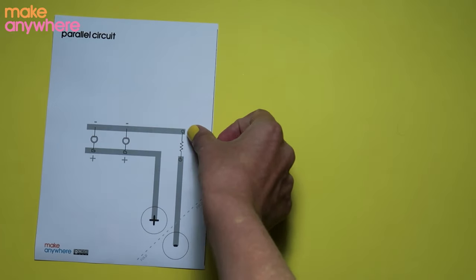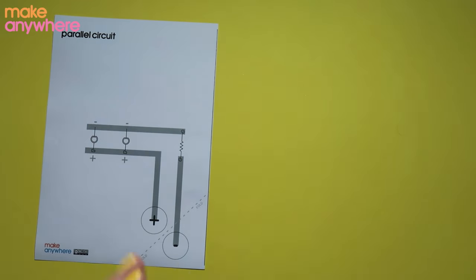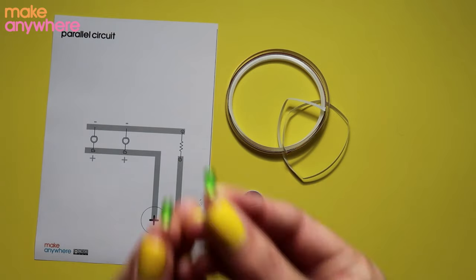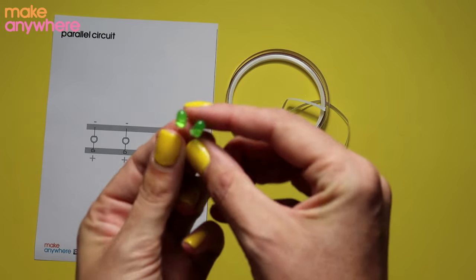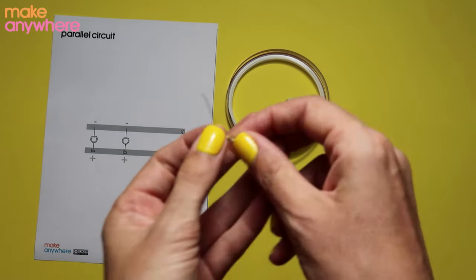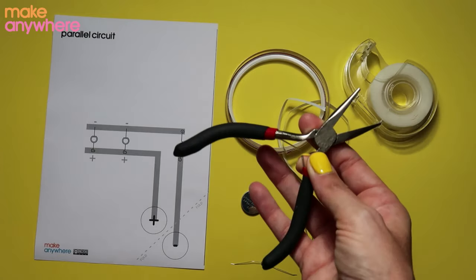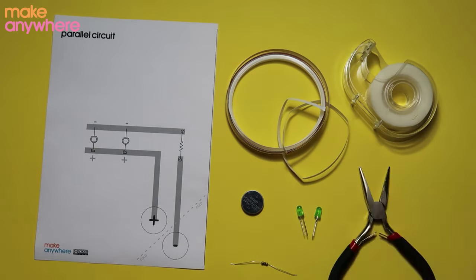You'll need our free template that you can find in the description below, some copper tape, a three volt cell battery, two green five millimeter LEDs, a resistor, sellotape, pliers to bend your LED and resistor, and some scissors.